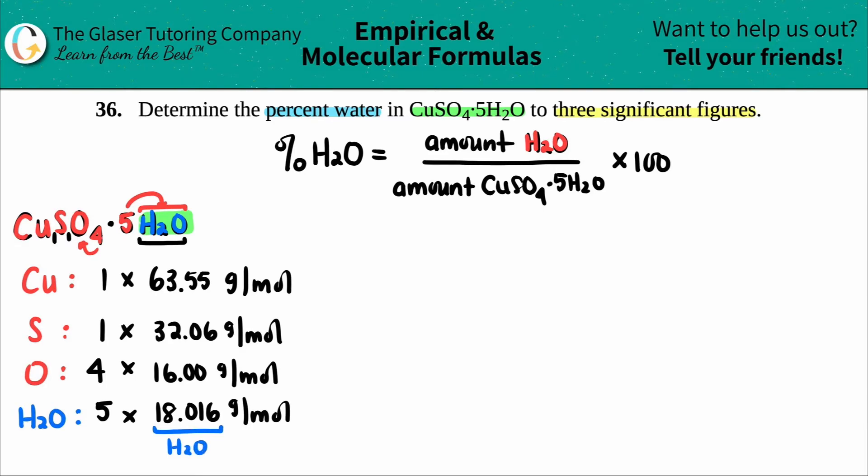Now all I got to do is just multiply what I said, right? So let's do it. 1 times 63.55 is 63.55. And that's the grams per mole of the copper. The sulfur, 1 times 32.06 is 32.06. And that's grams per mole.